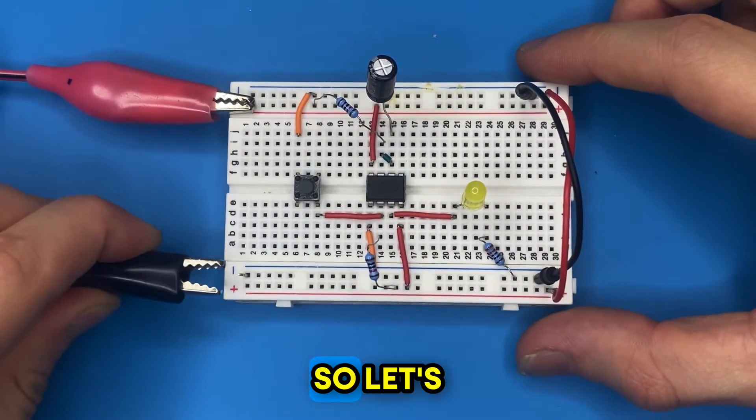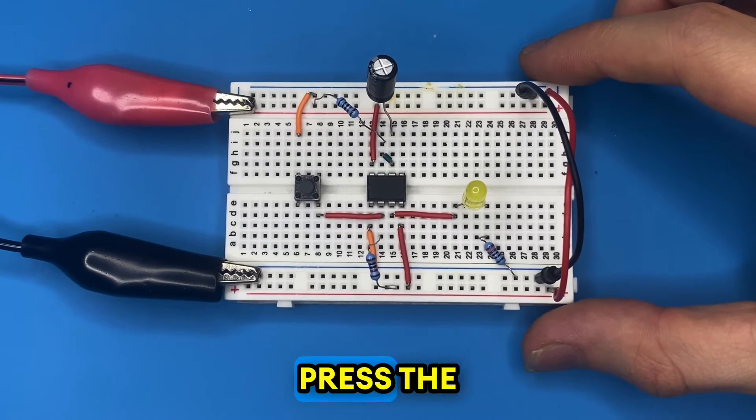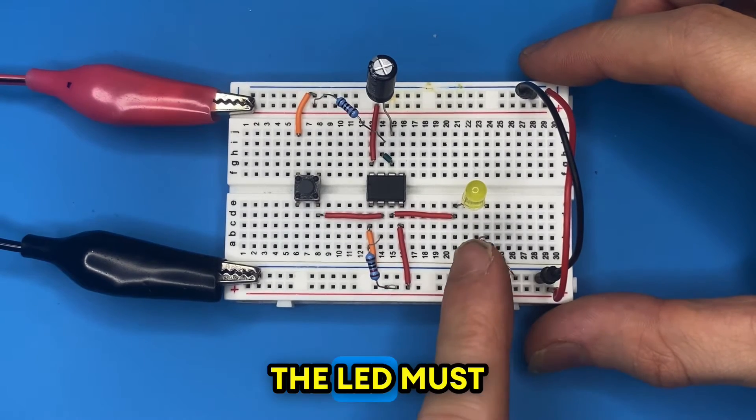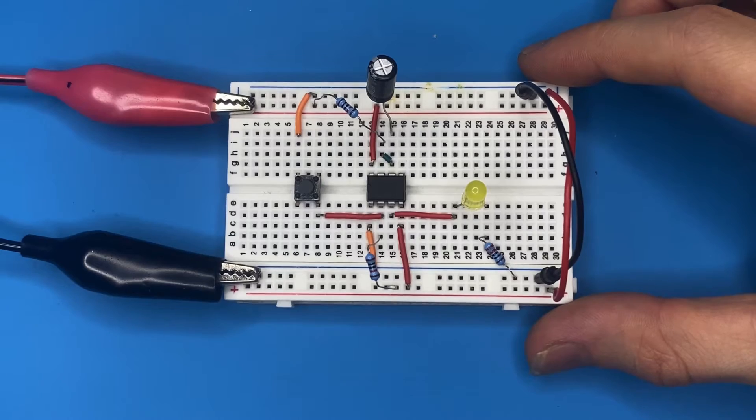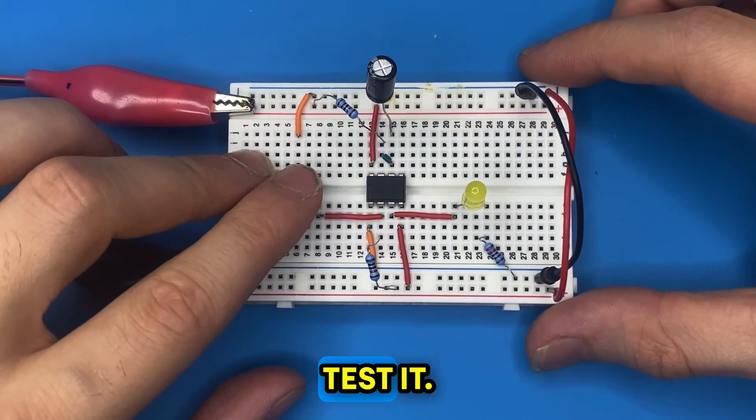Now we are good to go. So let's test our circuit. Whenever I press the push button switch, the LED must turn on and it is going to turn off after a few seconds. So let's test it.